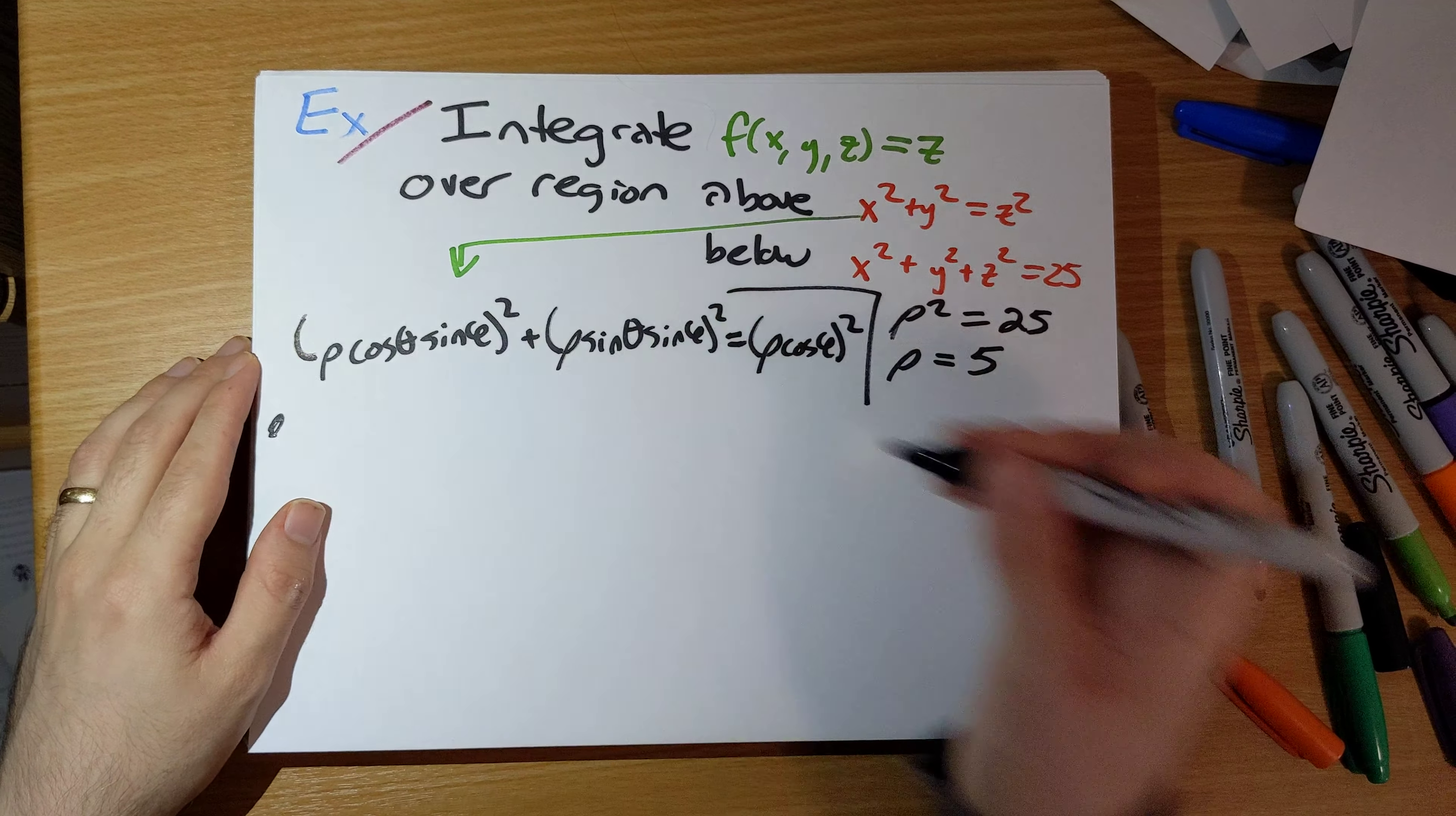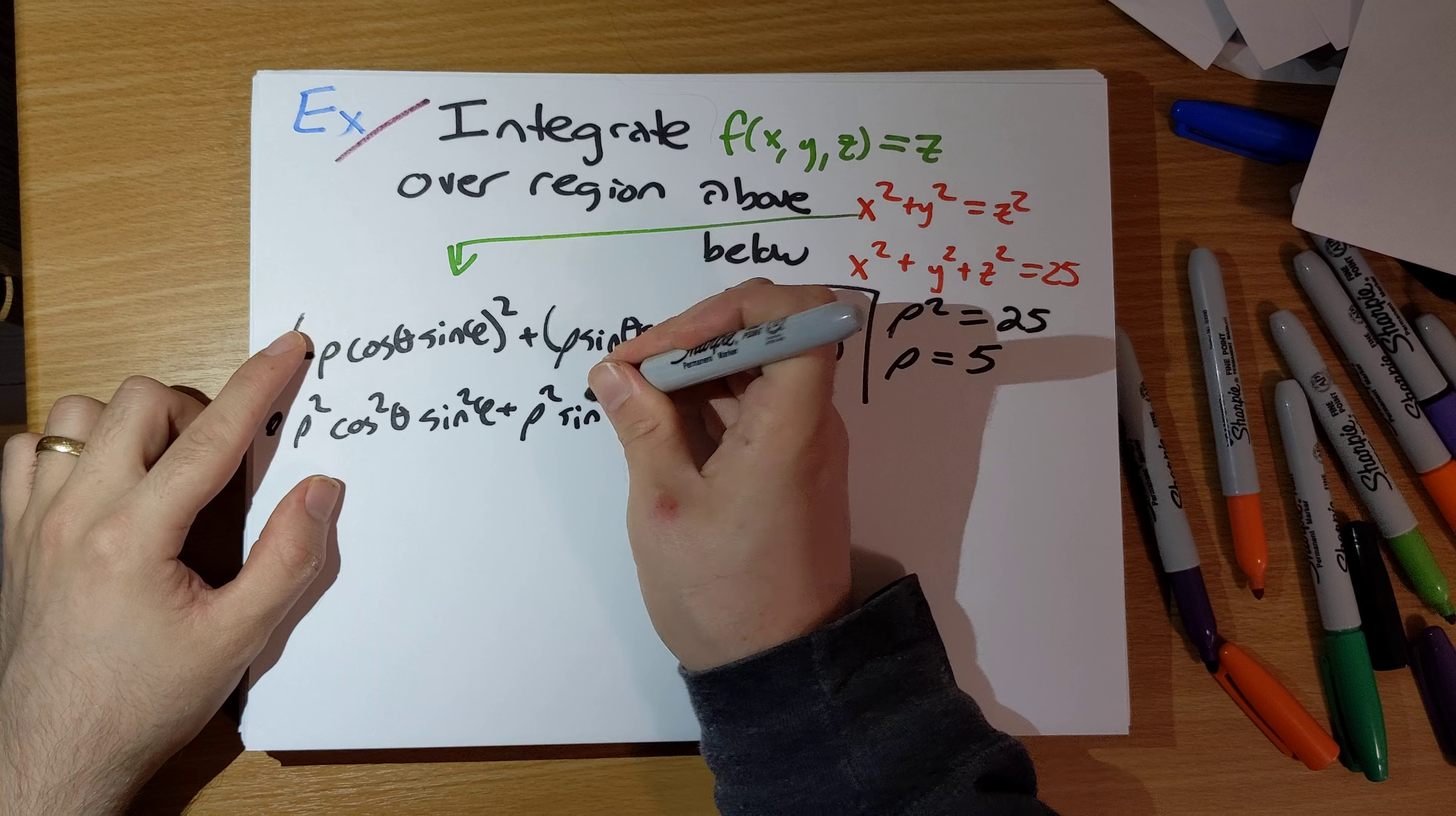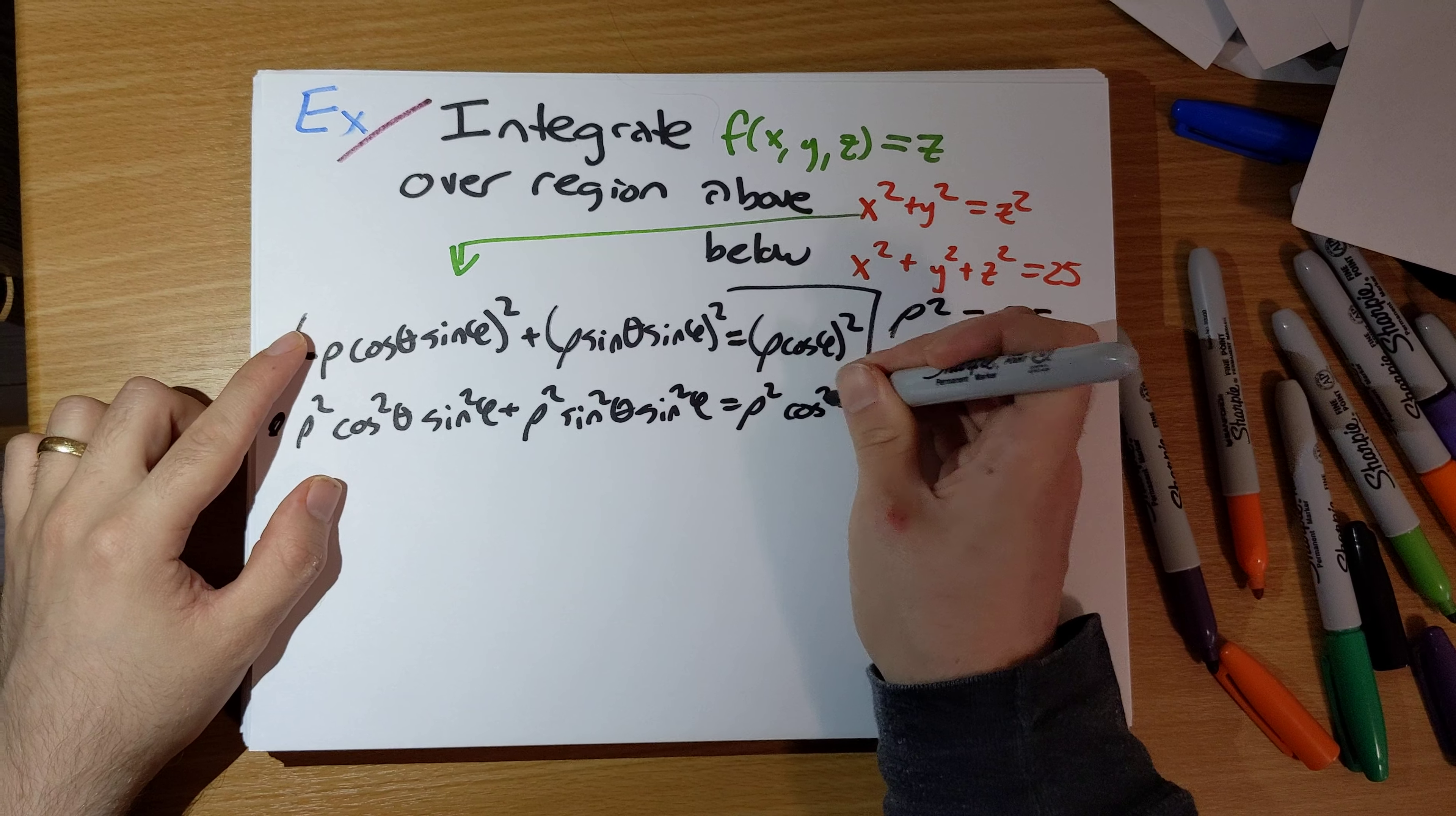Okay, so what does this give us? Rho squared cosine squared theta sine squared phi plus rho squared sine squared theta sine squared phi equals rho squared cosine squared phi.